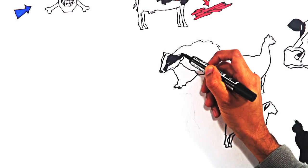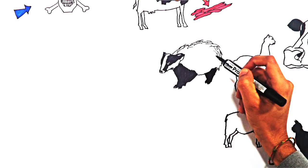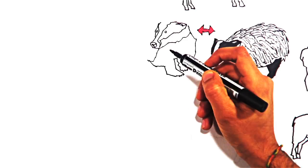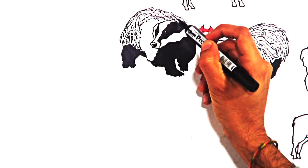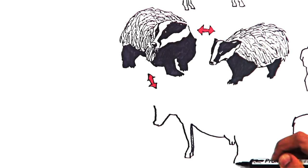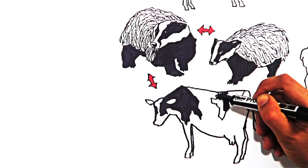In the parts of England where there are high levels of bovine TB, badgers are significant carriers of infection. As well as spreading between badgers, the bacteria can spread from badgers to cattle and vice versa.